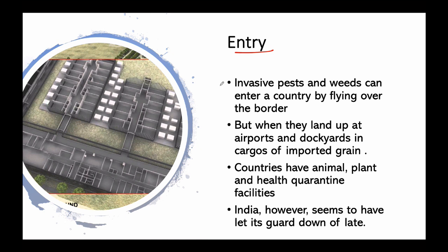Borders are for humans and countries - for species, there are no borders. These pests can obviously cross over from neighboring countries and then multiply and grow here. If they are crossing borders from Pakistan, Bangladesh, or China, we have no control over that.